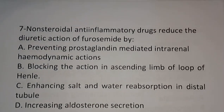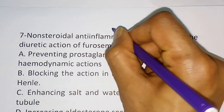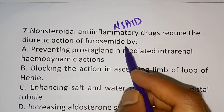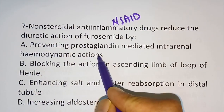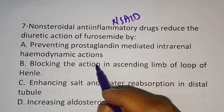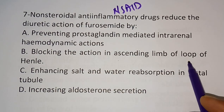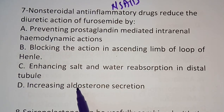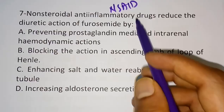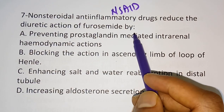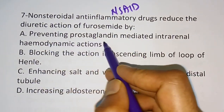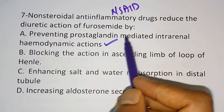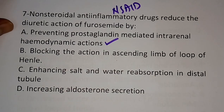Question number seven: Non-steroidal anti-inflammatory drugs (NSAIDs) reduce the diuretic action of furosemide by which mechanism? Option A: Preventing prostaglandin-mediated intrarenal hemodynamic action. Option B: Blocking action in the ascending limb of loop of Henle. Option C: Enhancing salt and water reabsorption in the distal tubule. Option D: Increasing aldosterone secretion. The correct answer is Option A — NSAIDs reduce furosemide's diuretic action by preventing prostaglandin-mediated intrarenal hemodynamic action.